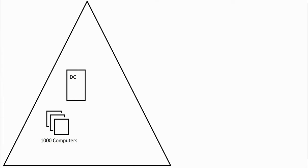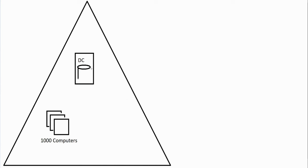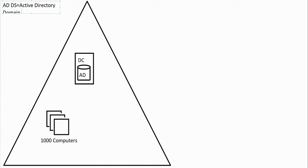In Active Directory, domains were represented by a triangle. A domain controller was essentially a server that had a database on it — the Active Directory database. We still call it ADDS: Active Directory Domain Services. When you hear that term, it typically means an on-premise domain, although there is a version that can be hosted in the cloud known as Azure Active Directory Domain Services.